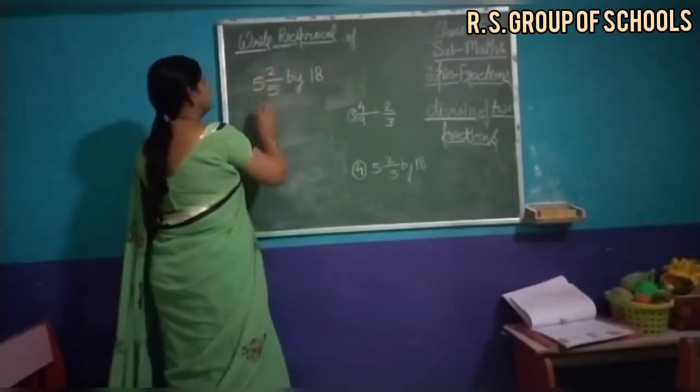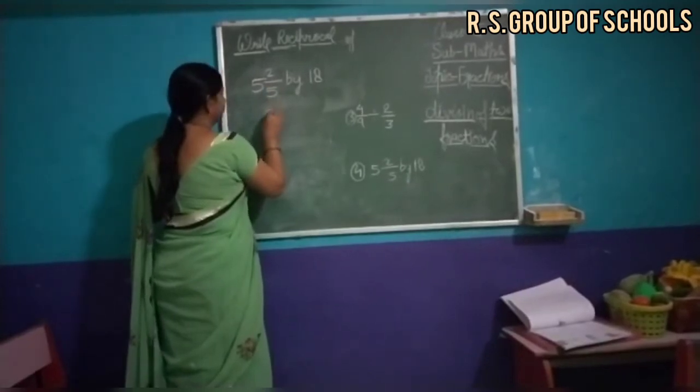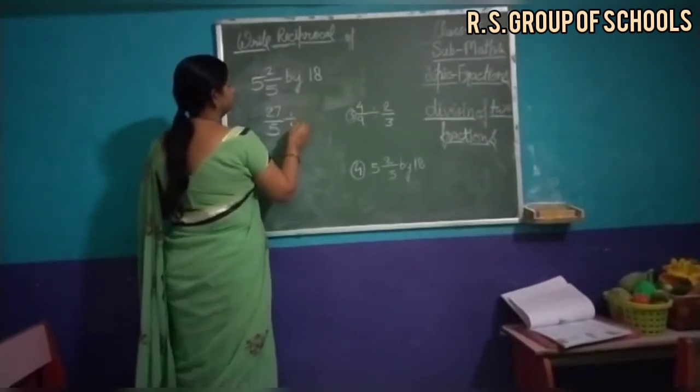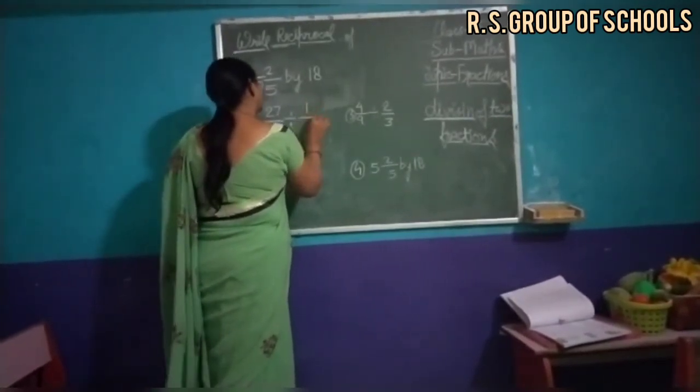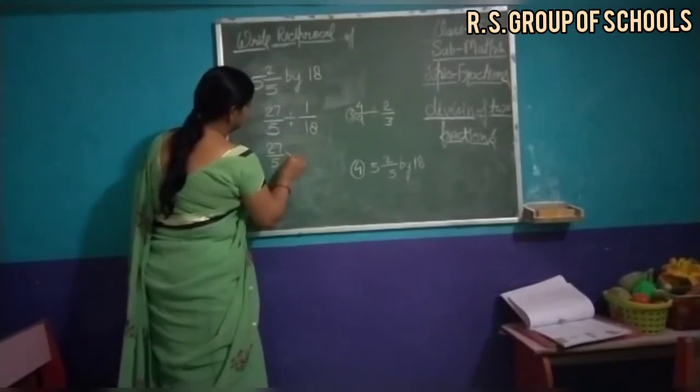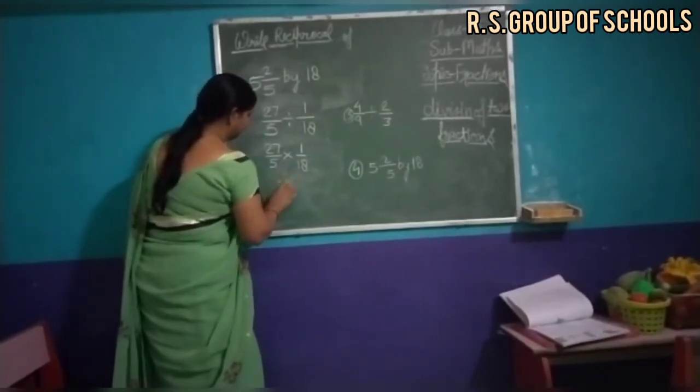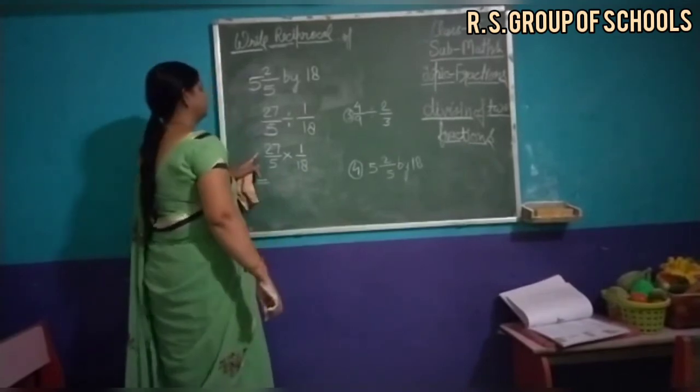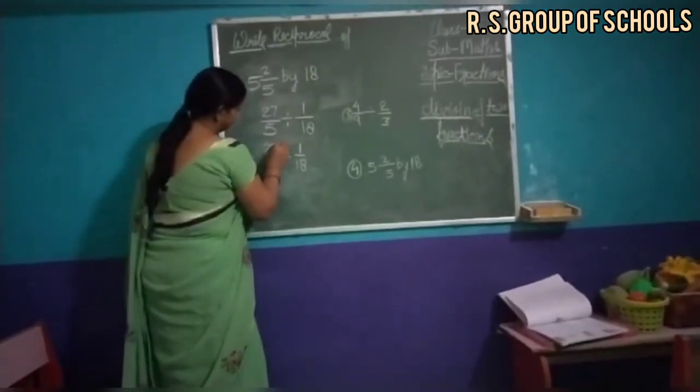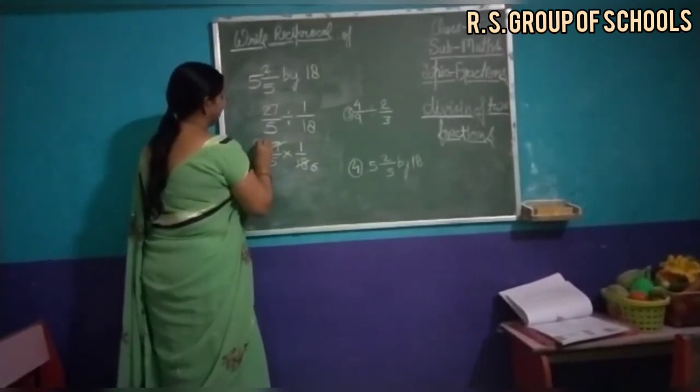This is a mixed fraction. Firstly, change it into simple fraction. 5 by the 25 plus 2, 27 upon 5 by 18. Reciprocal करेंगे, 1 upon 18, sign changes to multiply. 18 and 27, both digits are in 3, 6, 9 table.